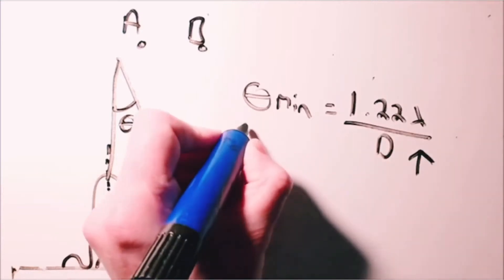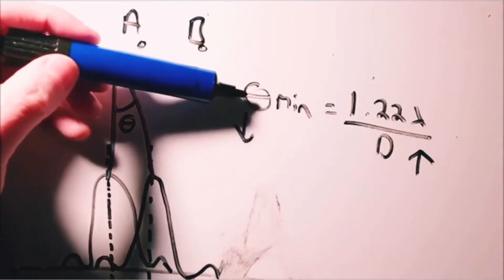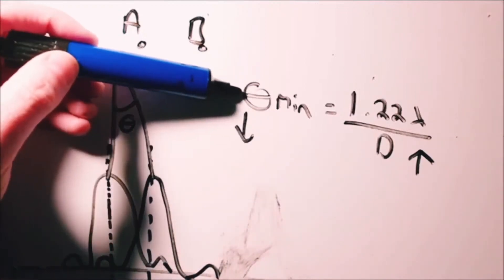That if I increase the diameter of the camera, if I get basically a bigger lens, then the viewing angle is reduced.